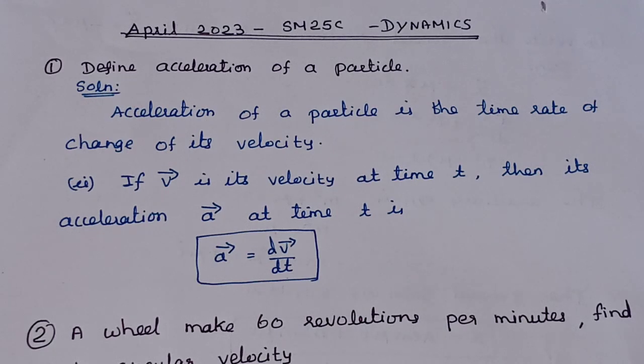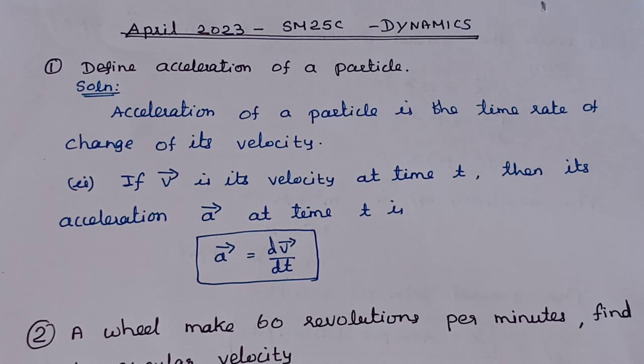If v-vector is its velocity at time t, then its acceleration vector at time t is equal to dv-vector by dt. This is the elaborated form.